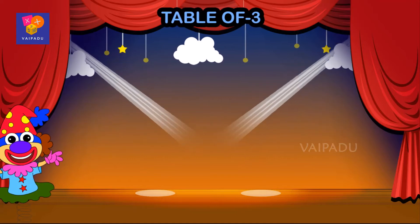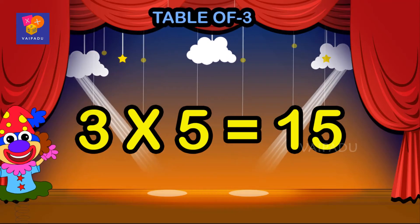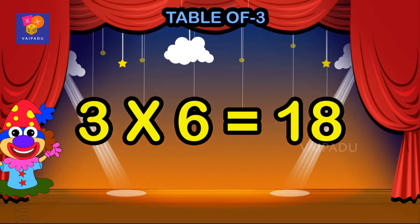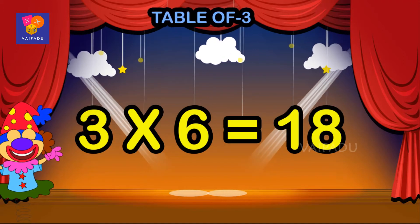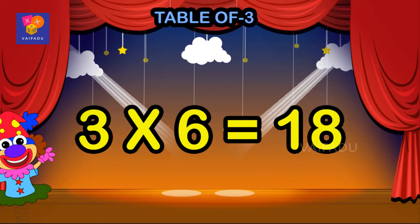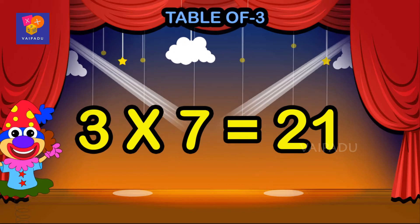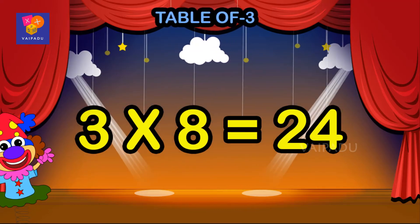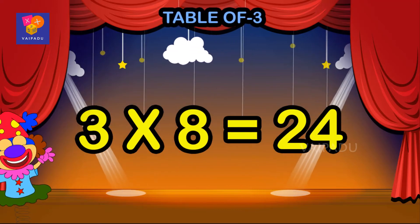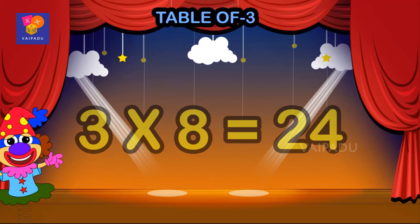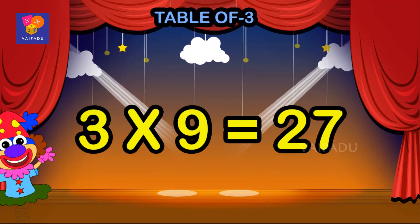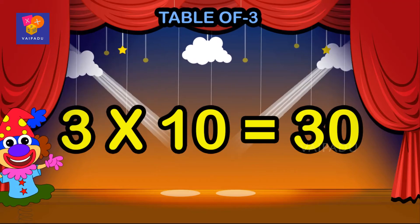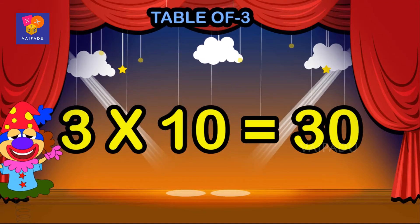Three fives are fifteen, three sixes are eighteen, three sevens are twenty one, three eights are twenty four, three nines are twenty seven, three tens are thirty.